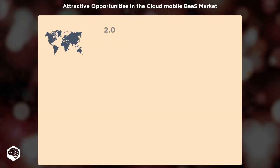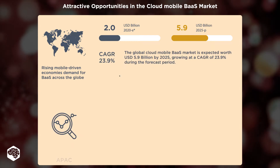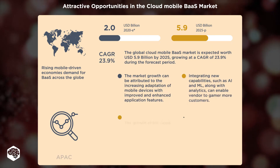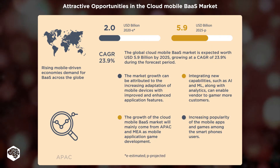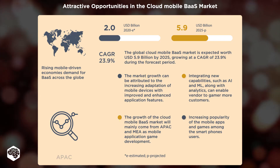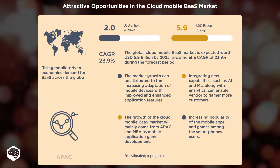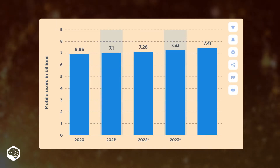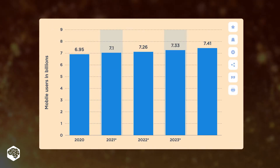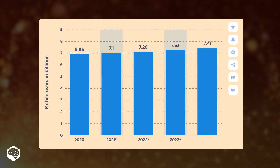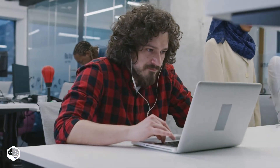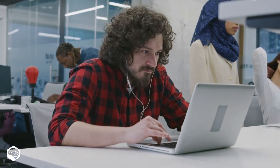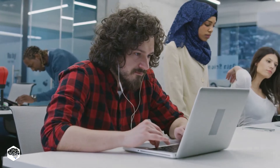According to a report by Markets and Markets, the backend-as-a-service market reached $2 billion in 2020 and is expected to grow to $5.9 billion by 2025. The market is growing thanks to increased usage of cloud-based applications for mobile devices, and at least half of all mobile applications are expected to use the BAS model by 2023.